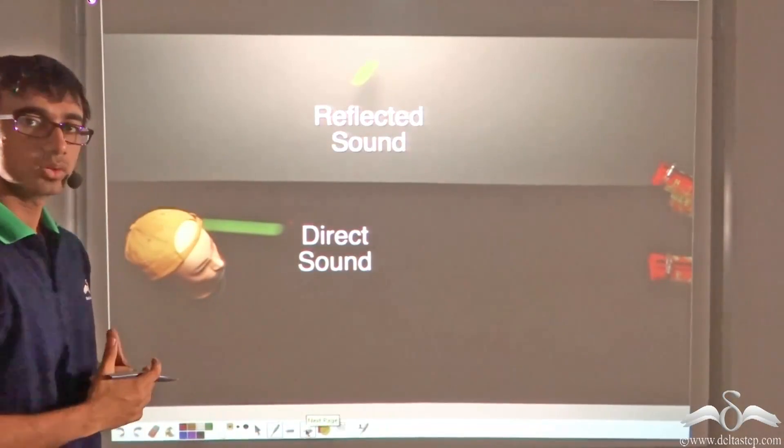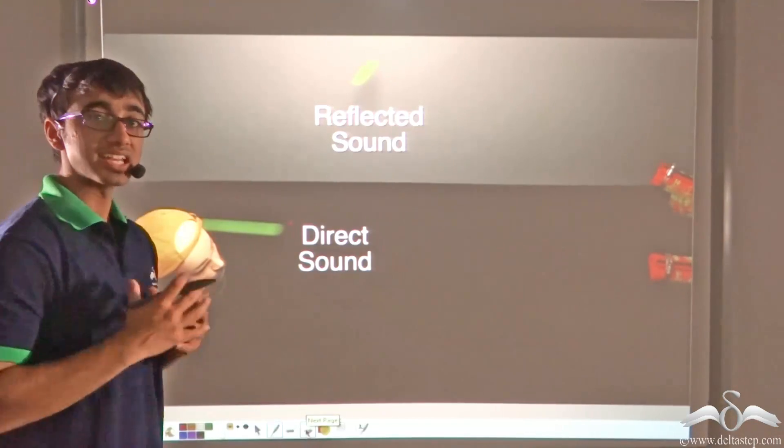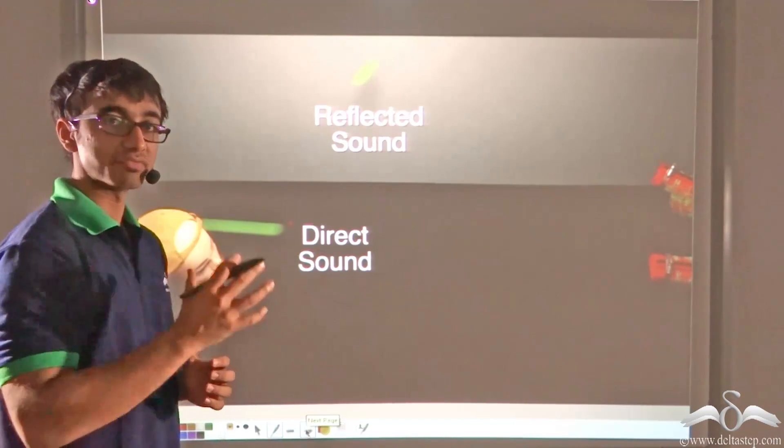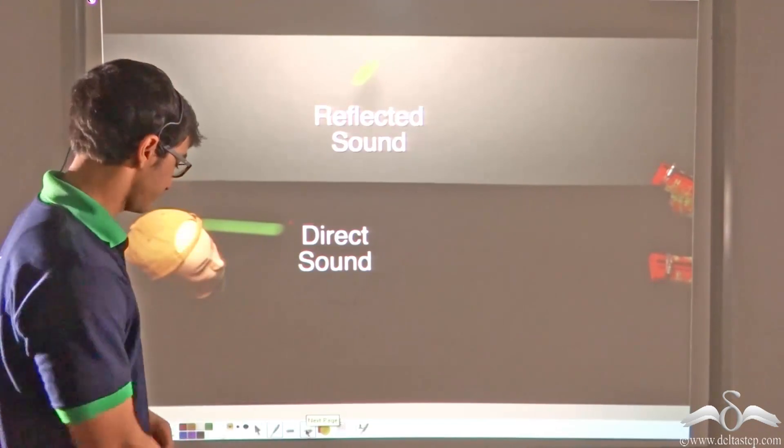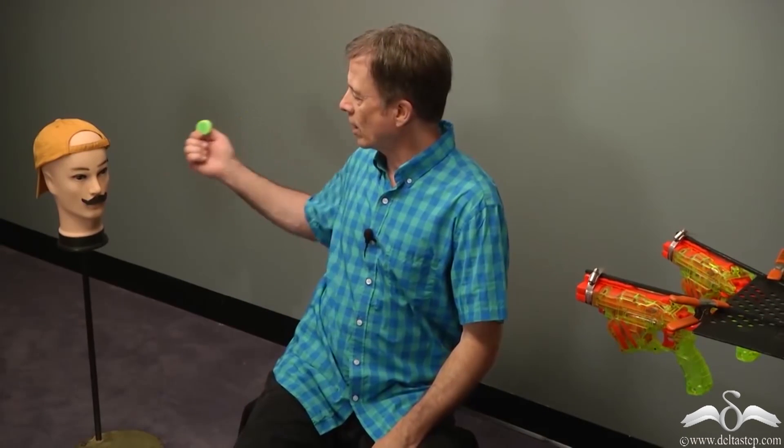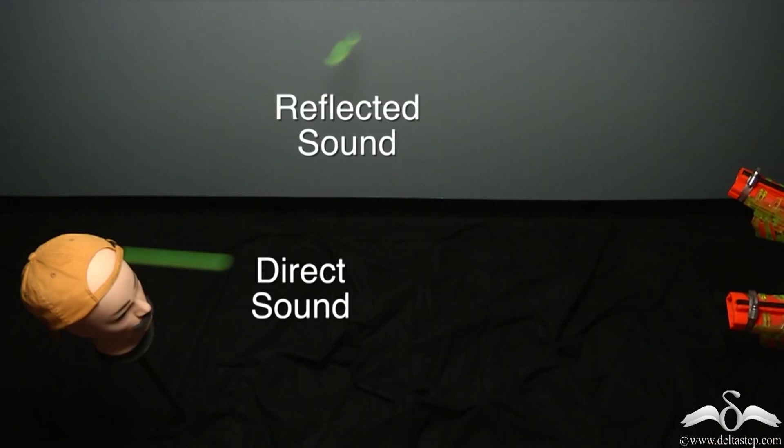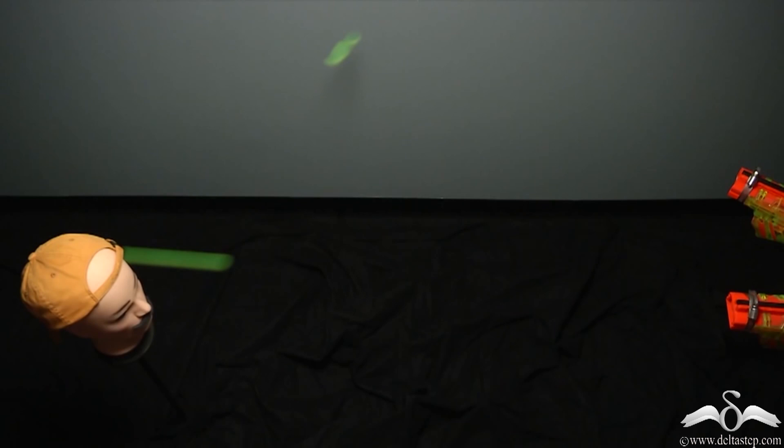Let us take a look at this video to clearly illustrate the concept of reflected sound and direct sound. In this video, we have taken two guns. Gun one fires a disc which reaches the target directly, and gun two fires a disc which first hits the wall, gets reflected, and then hits the target. Let us see what happens when both guns fire the disc at the same time.